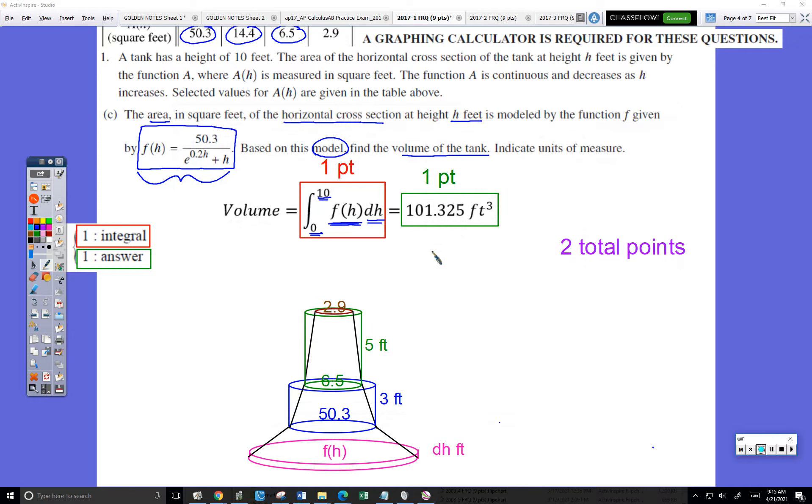This is 1c, the area in square feet of the horizontal cross-section. So again, the slice at some height h feet is modeled by this function f.